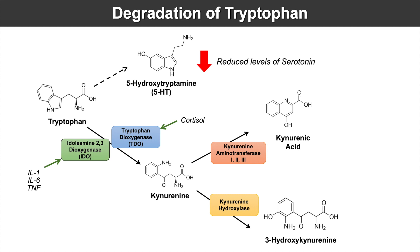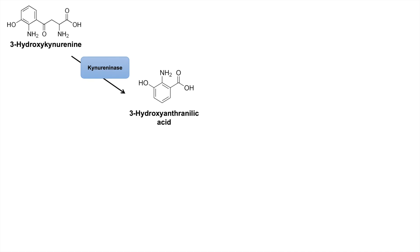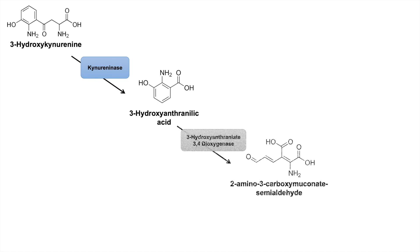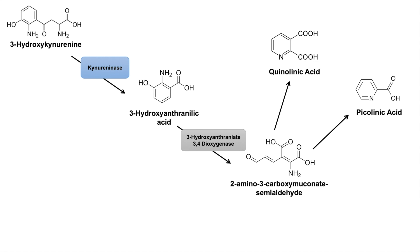That's why the kynurenine pathway has been implicated in issues with serotonergic functioning and also with psychiatric health issues. Once we have 3-hydroxykynurenine, it can be acted on by the enzyme kynureninase to produce 3-hydroxy anthranilic acid. This can then be acted on by the enzyme 3-hydroxy anthranilate 3,4-dioxygenase to form 2-amino-3-carboxymuconate semialdehyde, which can then be further broken down into the two end metabolites picolinic acid and quinolinic acid.